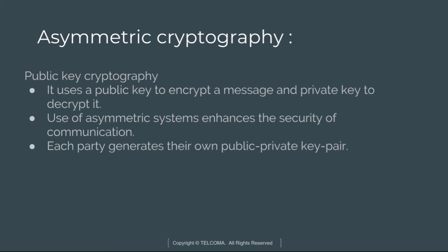Asymmetric cryptography is basically public-key cryptography. It uses a public key to encrypt a message and a private key to decrypt a message. Each party generates their own public-private key pair. Examples of this include RSA — Rivest, Shamir, Adleman — and ECC, which is Elliptic Curve Cryptography.